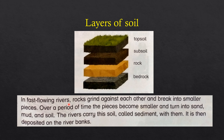In fast-flowing rivers, rocks grind against each other and break into smaller pieces. Large rocks collide and get ground down into smaller pieces. Over a period of time, the pieces become smaller and turn into sand, mud, and soil — that is how rocks are converted into sand, mud, and soil.